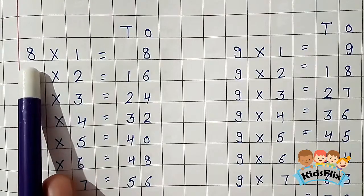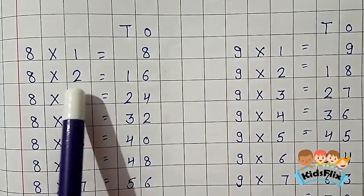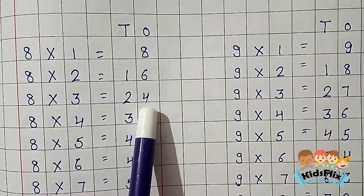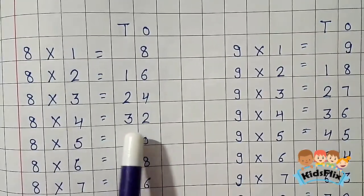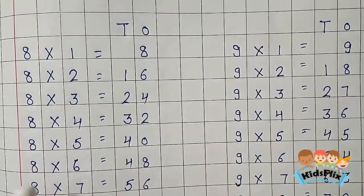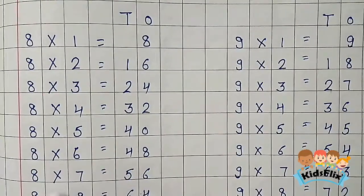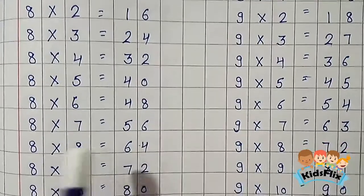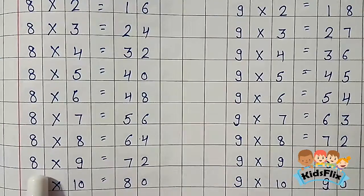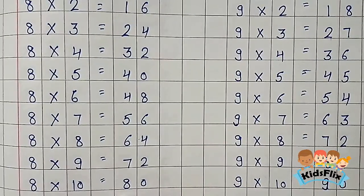Now the table of 8. 8 1s are 8. 8 2s are 16. 8 3s are 24. 8 4s are 32. 8 5s are 40. 8 6s are 48. 8 7s are 56. 8 8s are 64. 8 9s are 72. 8 10s are 80.